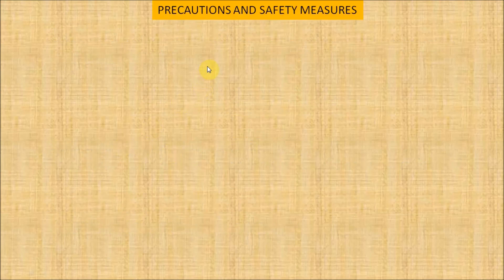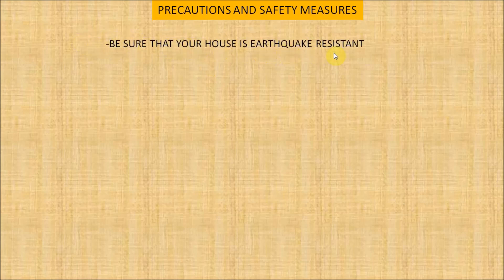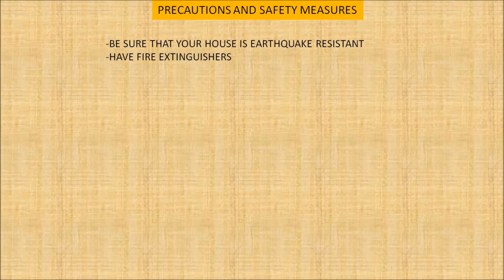Now let us see the precautions and safety measures in times of earthquakes. First, be sure that your house is earthquake resistant. Secondly, have a fire extinguisher located on each floor. In case of an earthquake, rush to open space away from trees, electric wires and poles. If you are driving, move the vehicle to the side of the road away from power lines and stop — avoid driving.